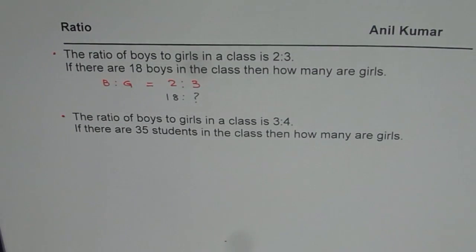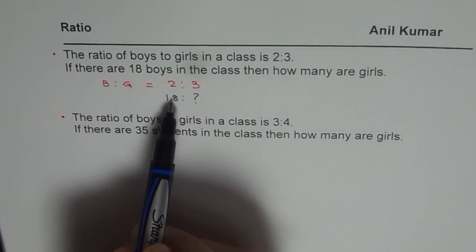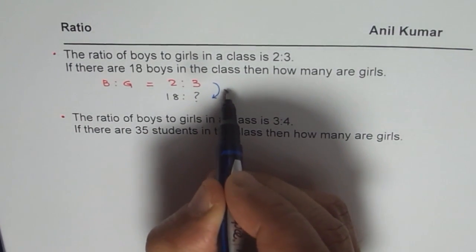So that is the ratio question. Now to solve such questions what you need to do is see the relation. So from 2 to 18 how do we get there? To go there we have to multiply by 9.